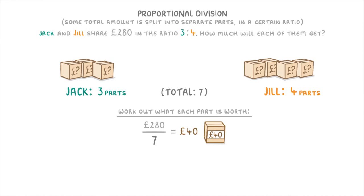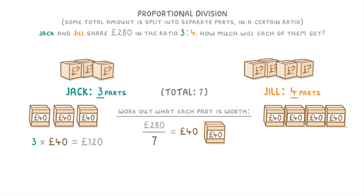And then because we said earlier that Jack has 3 parts, and we know that each part is worth £40, we know that he'll have 3 times 40, which is £120. Whereas if we do the same thing for Jill, because she has 4 parts, we multiply the £40 by 4, showing that she gets £160.